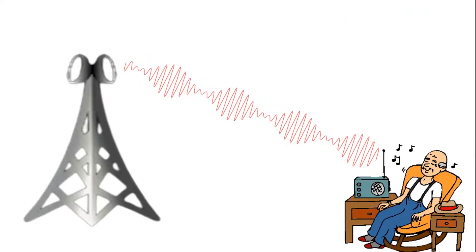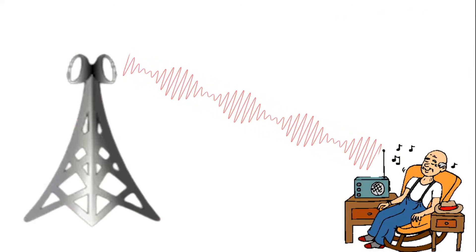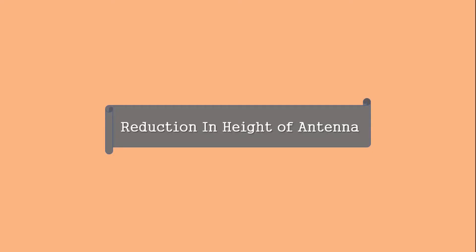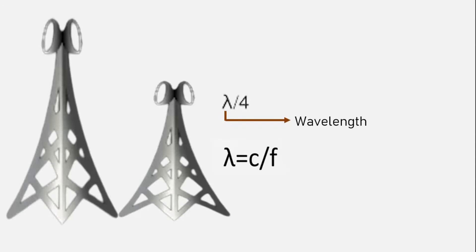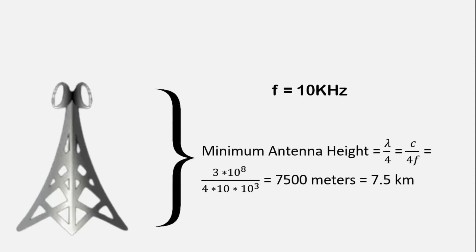Other advantages of modulation include reduced antenna height. For the transmission of radio signals, the antenna height must be multiple of lambda by 4. Here lambda is the wavelength and lambda equals to C by F, where C is the velocity of light and F is the frequency of the signal to be transmitted.